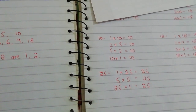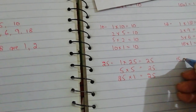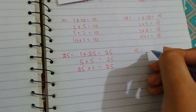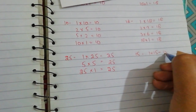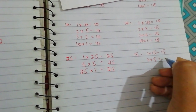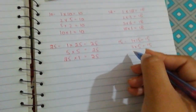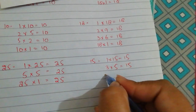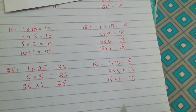For 15: 1 multiplied by 15 is equal to 15, 3 multiplied by 5 is equal to 15, 5 multiplied by 3 is equal to 15, and 15 multiplied by 1 is equal to 15.